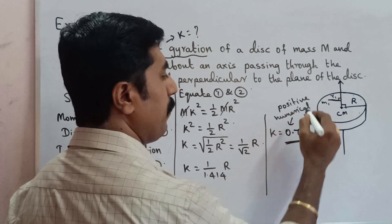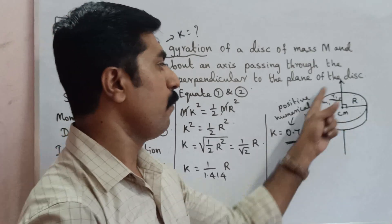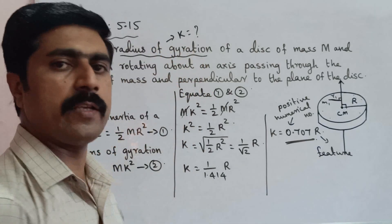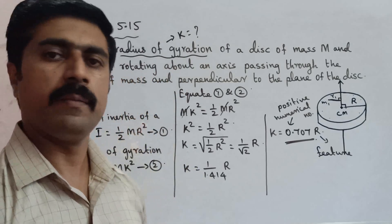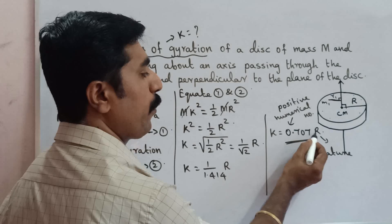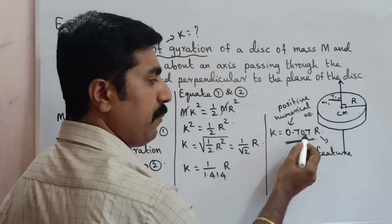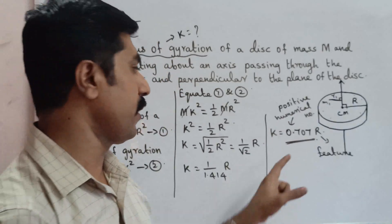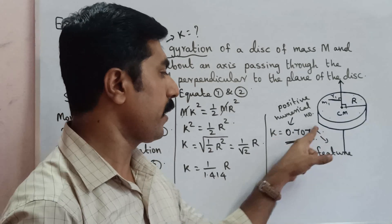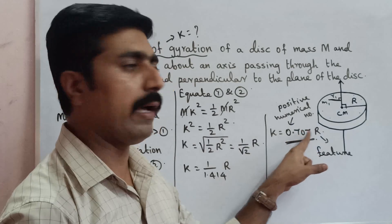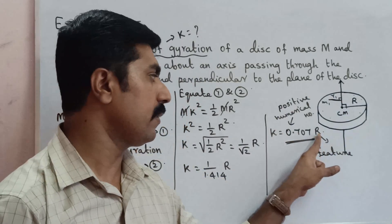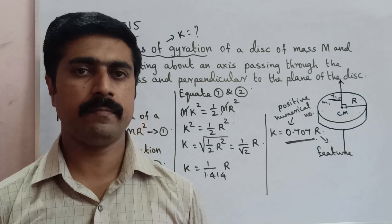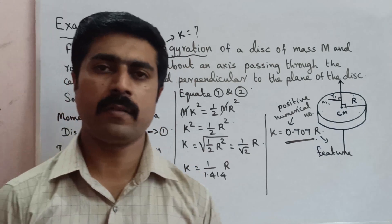The radius of gyration is a special feature of a body — it has breadth, height, and radius. The radius of gyration is the product of a positive numerical number and a feature of the disk, in this case the radius. So the radius of gyration equals a positive numerical number multiplied by the radius of the disk. That's it. This is the main problem — practice it. All the best, thank you.